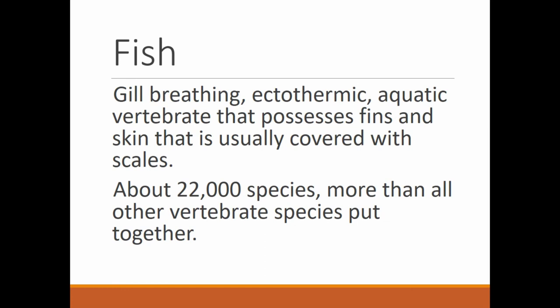Let's get into the fish. By definition, fish are gill-breathing, ectothermic — that's the zoological term for cold-blooded, meaning their body temperature changes with the environment — aquatic vertebrates that possess fins and skin that is usually covered with scales. There are exceptions; catfish don't really have scales but are still considered fish. There are about 22,000 species.